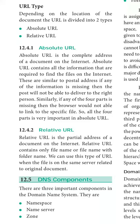A relative URL contains only partial information — the file name or the file name with a folder name. It can be used when the file is in the same server as the original document. A relative URL has very small information but is related to the absolute URL, containing partial information about the location of a file or website.